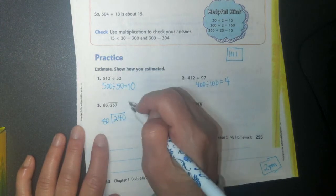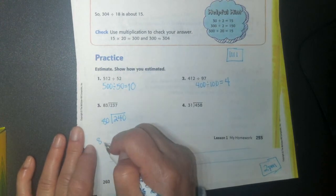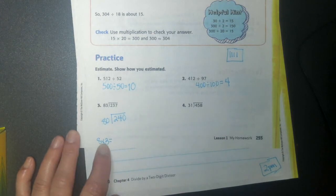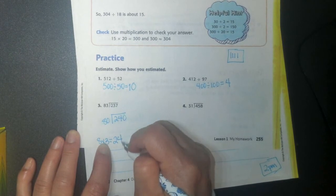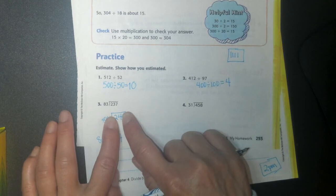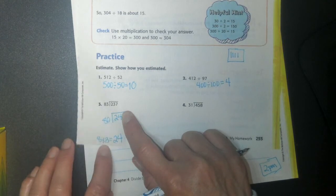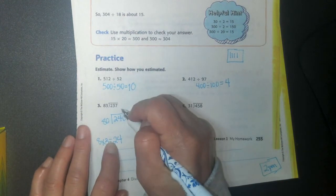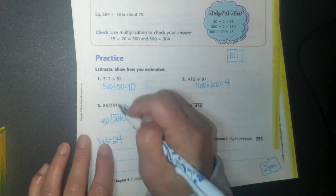Just because I know this math fact. Do you guys know this math fact? 8 times 3. Does anybody know 8 times 3? 24. Nice. So 80 into 240, so 8 goes into 24, 3 times. So 80 goes into 240, also 3 times.